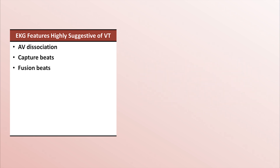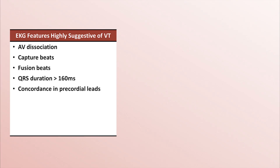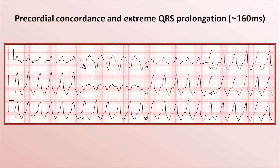Another feature is a particularly long QRS duration, above 160 milliseconds as a rough cutoff. There's also something called concordance in the precordial leads. Concordance means that among leads V1 through V6, all of them are either fully upright or fully down-going. Here's an example of both concordance in V1 through V6 and extreme QRS prolongation.